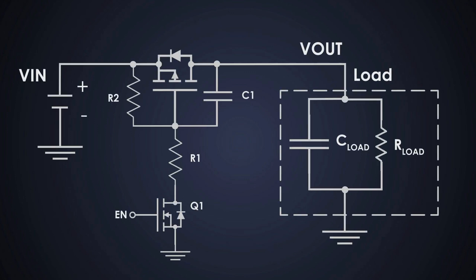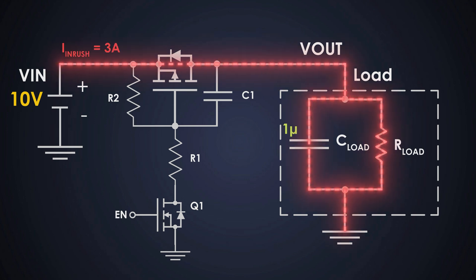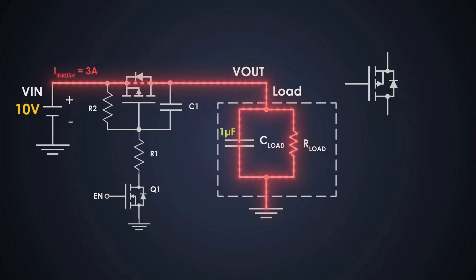Let's walk through a design example. First is the input voltage which is around 10 volts. The maximum load current or I load max is 5 amperes. The maximum allowable inrush current is 3 amperes. The load capacitance is 1 microfarad. The maximum gate to source voltage is 8 volts. The threshold voltage of the P-channel MOSFET is minus 0.67 volts. And the transconductance of the selected MOSFET is 5.9 Siemens.